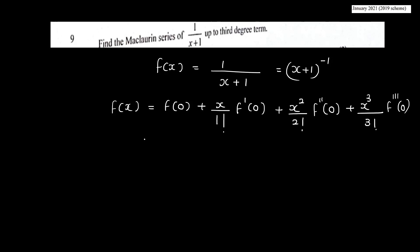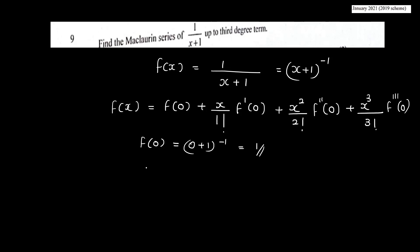Now we have F(x). So we have F(0): substituting x equals 0 into 1/(x+1) gives 1/(0+1) equals 1. Now we have to find F'(0).